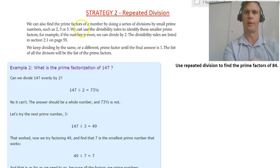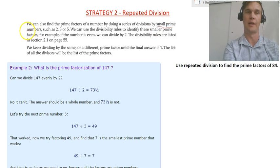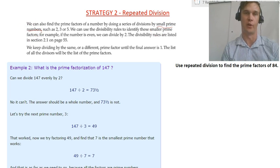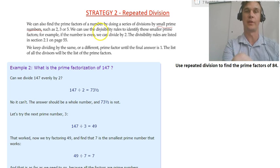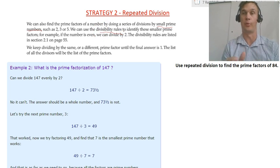We can also find the prime factors of a number by doing a series of divisions by small prime numbers such as 2, 3 or 5. We can use the divisibility rules to identify these smaller prime factors.